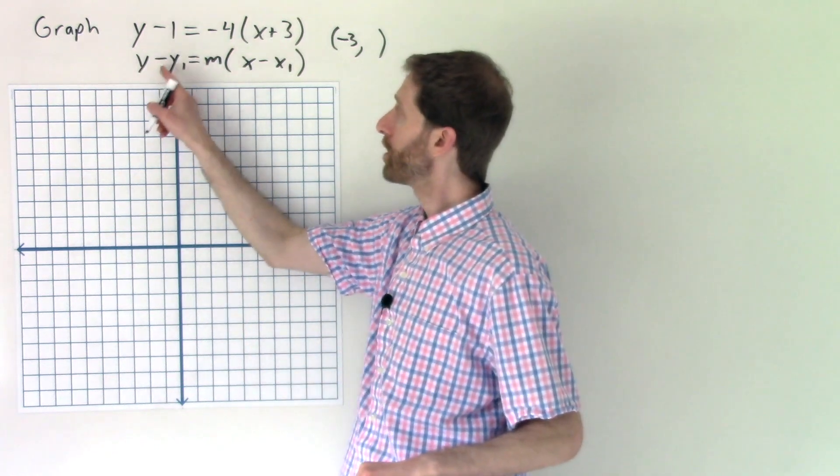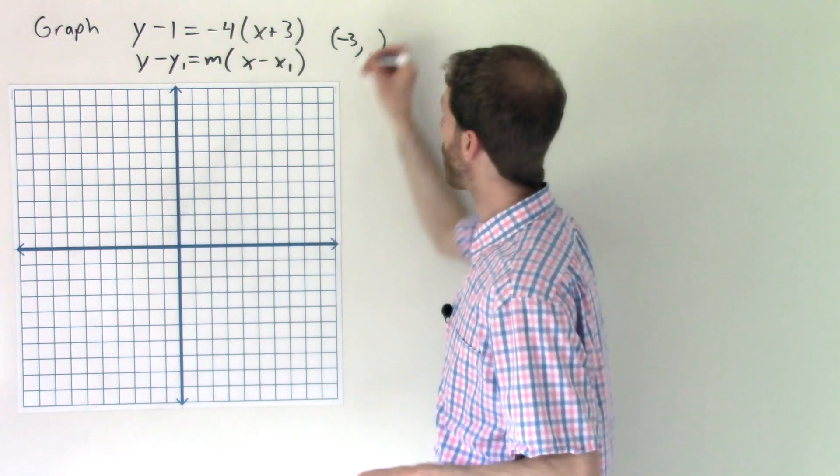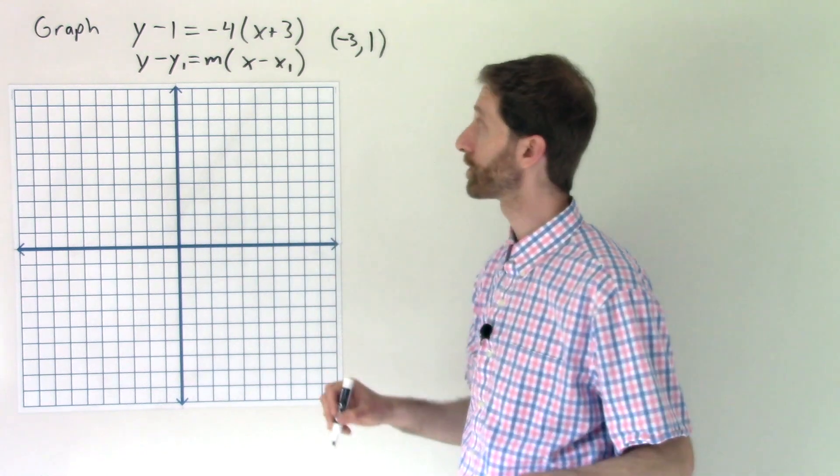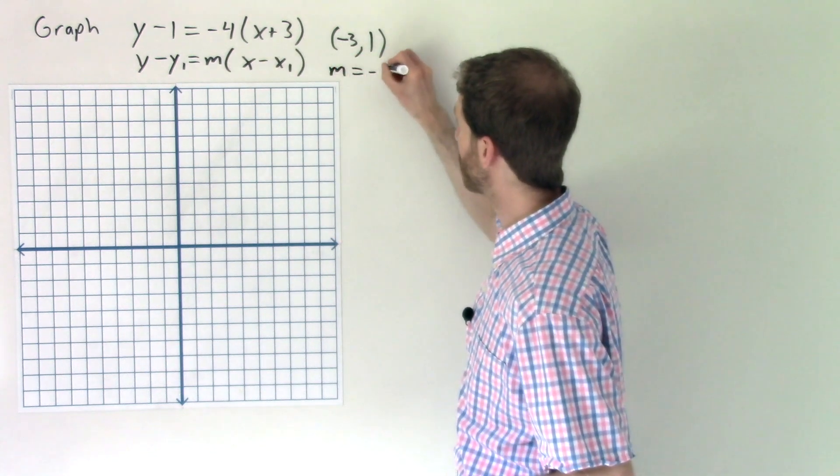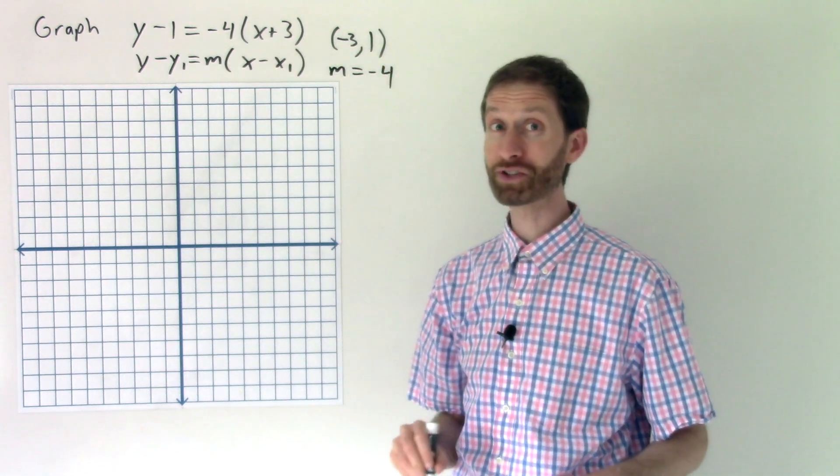y minus 1, well, so y minus y₁, y₁ must be 1. So this is the point that's on the curve. Now we also have the slope, which is sticking right out for us right there, m equals negative 4.